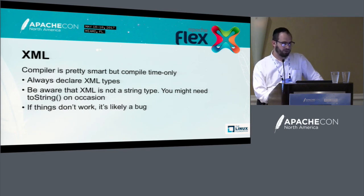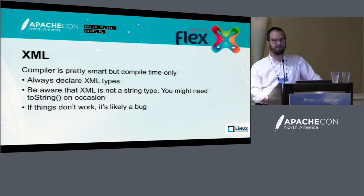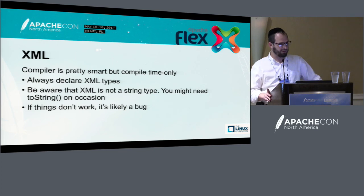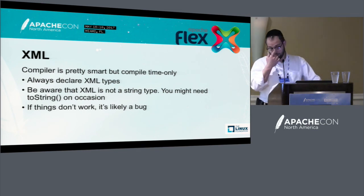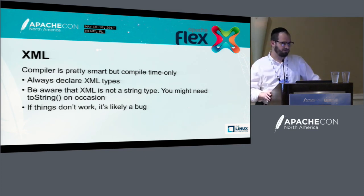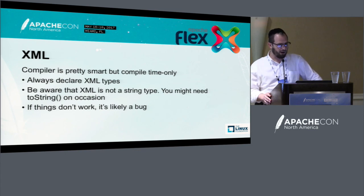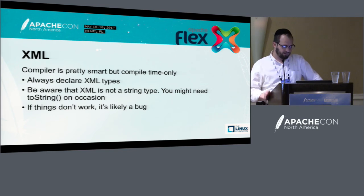XML — in general it's working pretty well; we're using it pretty extensively. The compiler needs to be aware that your XML is XML, or E4X statements will not work. So always declare your XML types. I tried to make XML evaluate to string intelligently, but sometimes you might end up with situations where you're comparing an XMLList to a string and the answer in JavaScript might be no. There might be occasions where you need to manually call toString(). If something doesn't work, let me know.